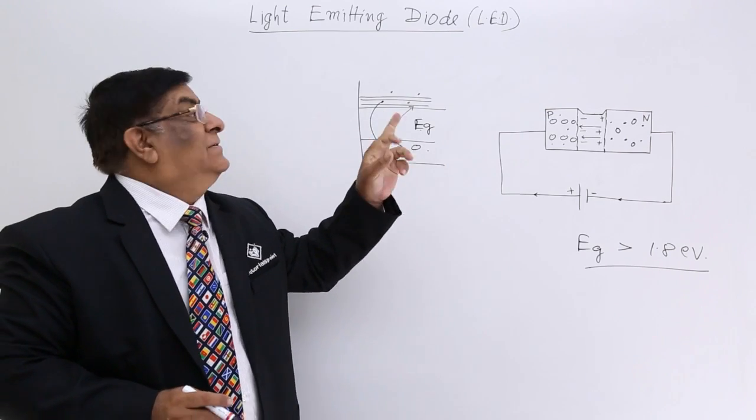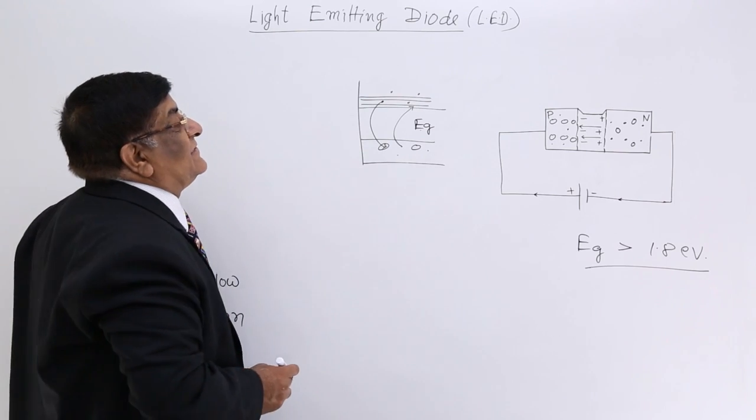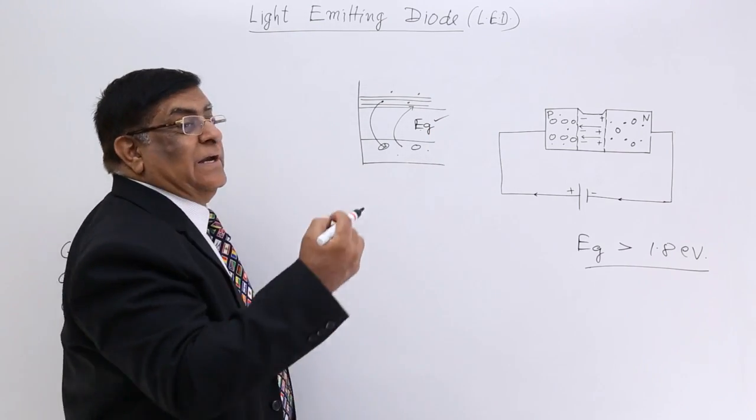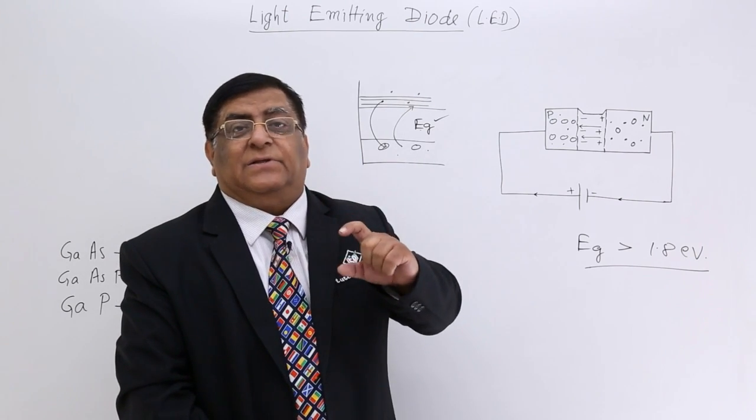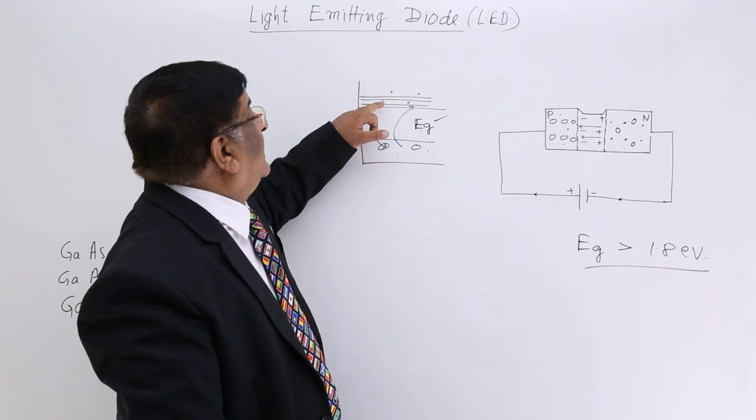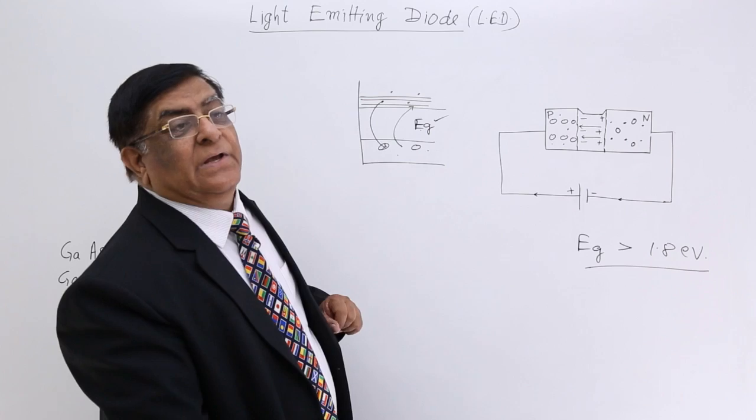How much energy will it return to us? Answer, slightly less than energy gap. So energy gap decides the amount of energy which is required to jump here, or which an electron will return on recombination.